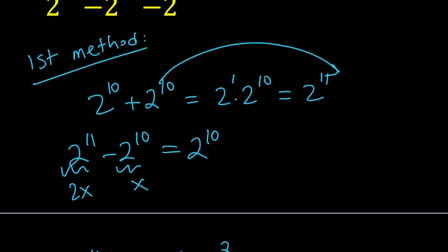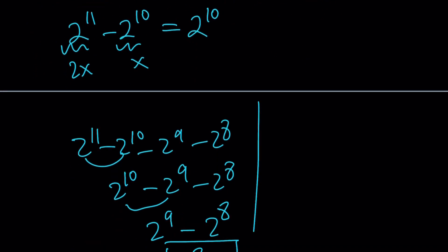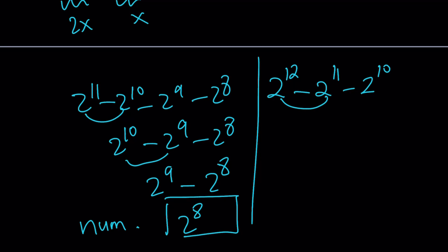How about the denominator? Let's go ahead and simplify the denominator. It is 2 to the power 12 minus 2 to the power 11 minus 2 to the power 10. Now these two will turn into 2 to the power 11, and these two will turn into 2 to the power 10. That's our denominator.